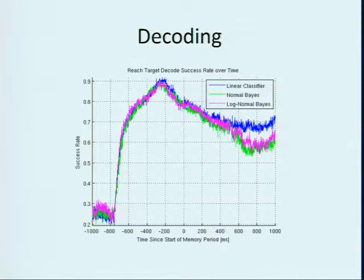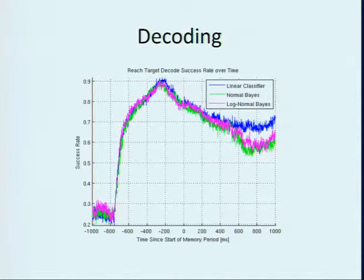The idea of decoding is to classify some new input — the firing rate of neurons — and assign a label to it, in this case a reach direction label. If you can do that well, then you're decoding. Linear classification, or classification in general, is perfectly suited for that task.